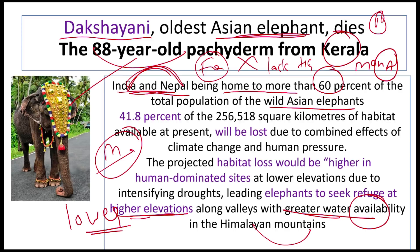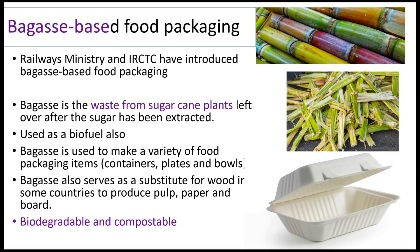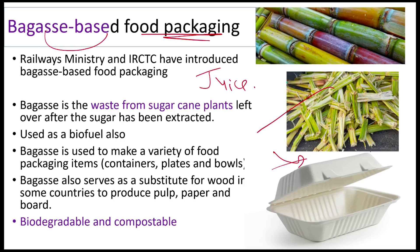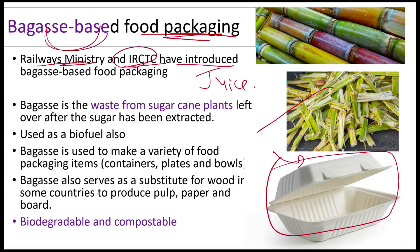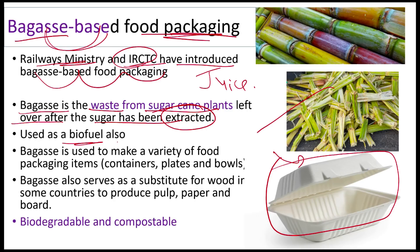Bagasse-based food packaging was in news because the Ministry of Railways and IRCTC introduced it in railways in 2018. Bagasse is the waste remaining from sugarcane after juice extraction. It can be used to create biodegradable, compostable containers, plates, and bowls — a non-plastic, environment-friendly alternative. Bagasse can also be used as a biofuel, substitute for wood, and to produce pulp, paper, and board.